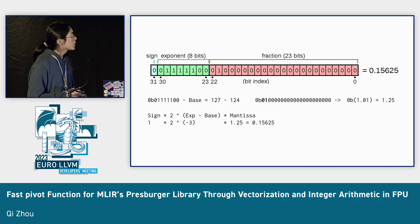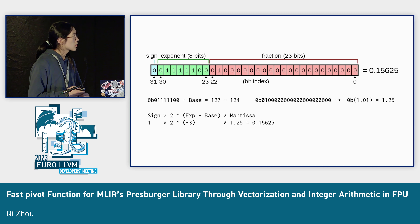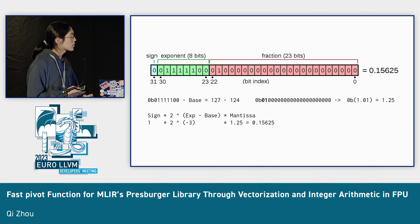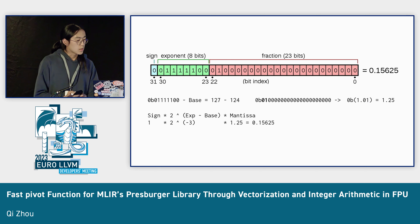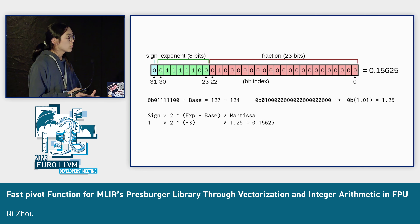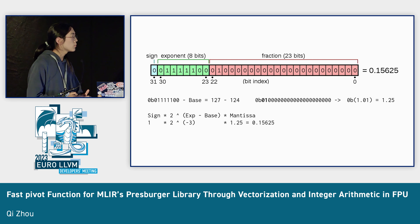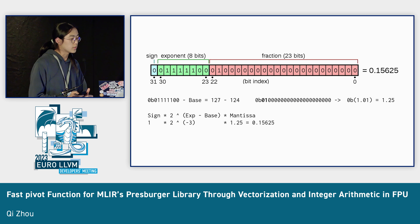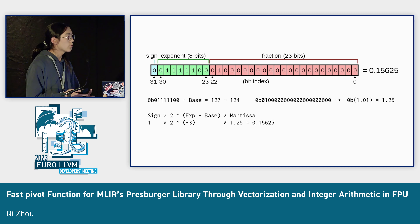In this given example, the decimal value in the exponent is 124. Subtracting the base, it becomes negative 3, and multiplying the fraction, it becomes 0.15625. The error of 0.2 plus 0.1 not equaling 0.3 is because of the conversion from a decimal fraction to a binary fraction — some base-10 fractions cannot be represented finitely in base 2.